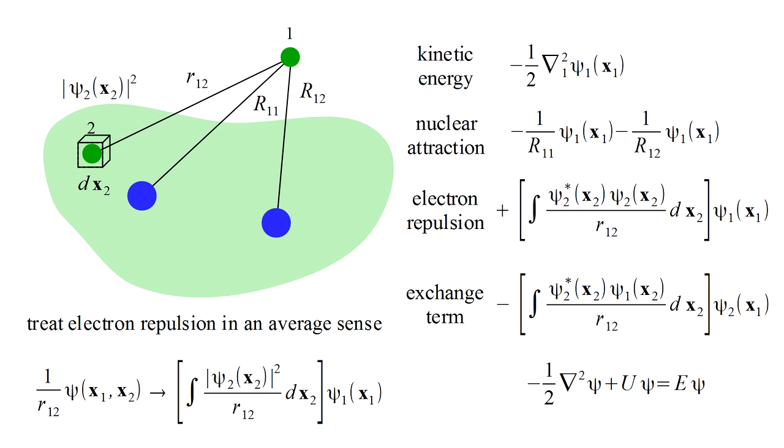This is called the exchange term because it's identical to the electron repulsion term with an exchange of orbitals. This is a strange expression and there's no classical analog in terms of a cloud of electric charge.